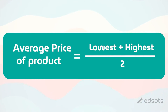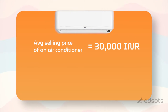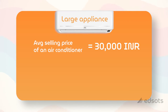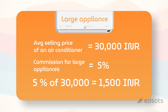After applying the same mathematical calculation, we got to know that the average selling price of an air conditioner is around 30,000 rupees. Also, ACs come under the large appliances category, and we know that Amazon gives a 5% commission on large appliances. So 5% of 30,000 is 1,500 rupees. On every single sale of an air conditioner, we can earn 1,500 rupees as commission.